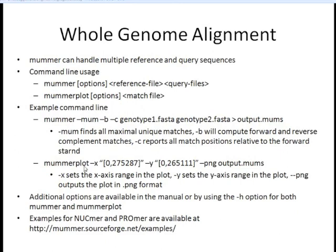We then run MUMmer plot so that we can see this on a graphical level. We can specify the X and Y axis to limit the range from base 0 to whatever we specify. We tell it to output in PNG format, and the output file from the previous MUMmer command serves as input here. There are additional options for both programs that you can find using the -h option or on the website.